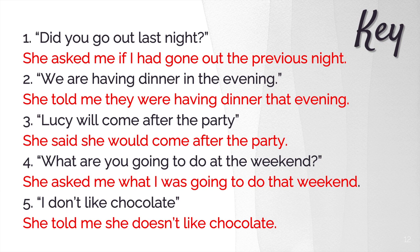'We are having dinner in the evening' becomes 'She told me they were having dinner that evening.' In sentence two, we have the present continuous, so in the indirect sentence we use the past continuous. Remember to change the pronoun from 'we' to 'they,' and the time expression 'in the evening' changes to 'that evening.' For number three: 'Lucy will come after the party' becomes 'She said she would come after the party.' We change 'will' to 'would,' and the pronoun stays the same — she said she would come.